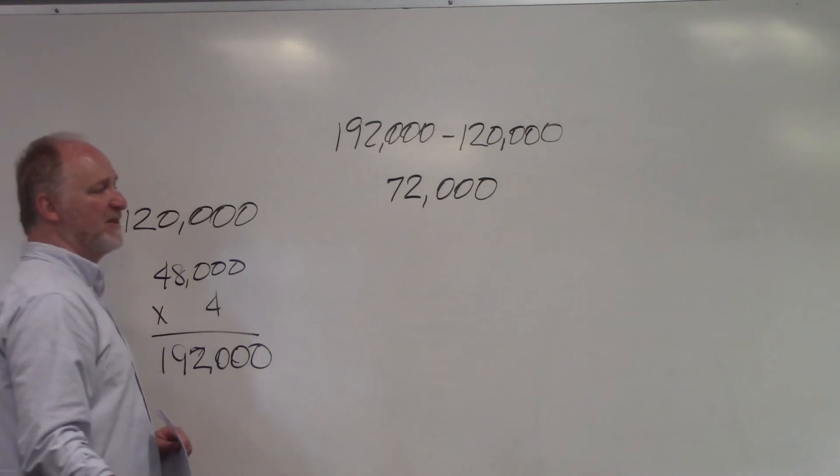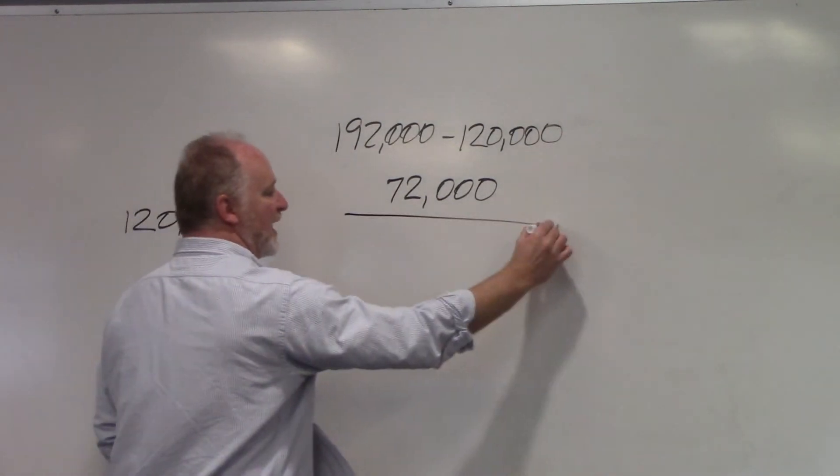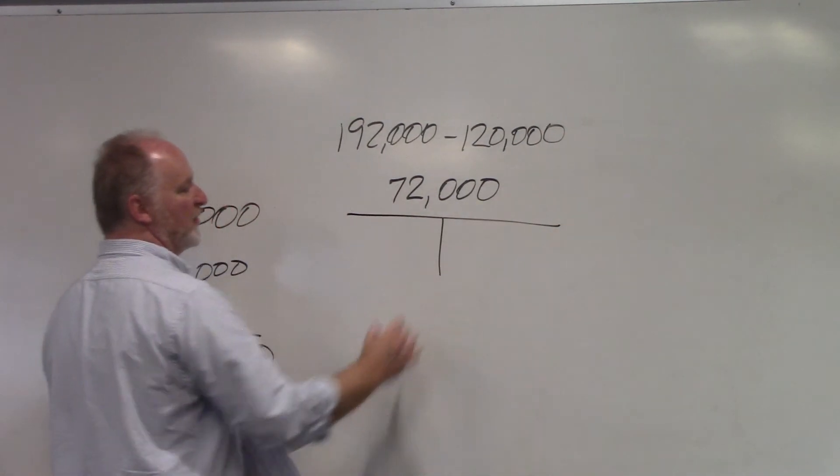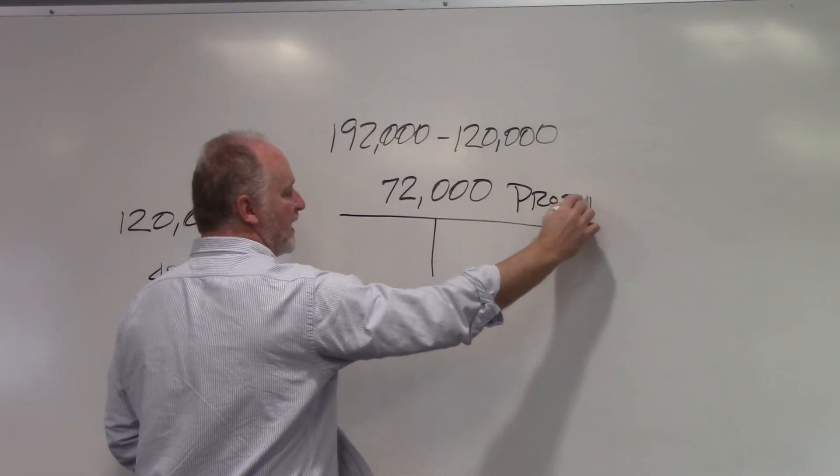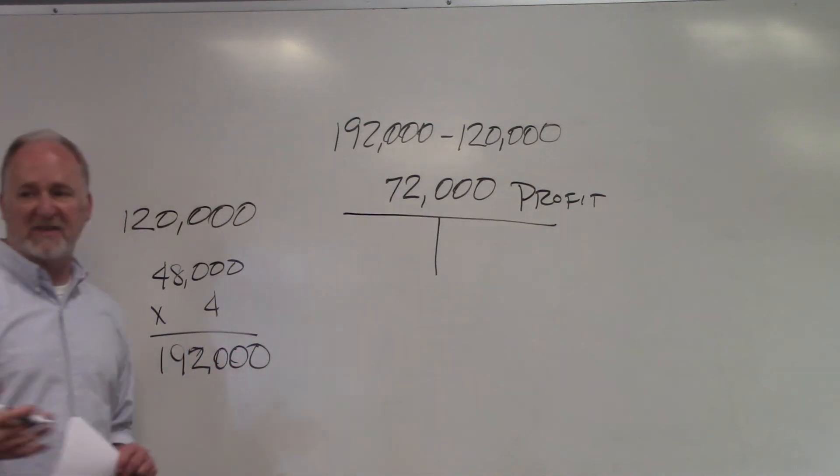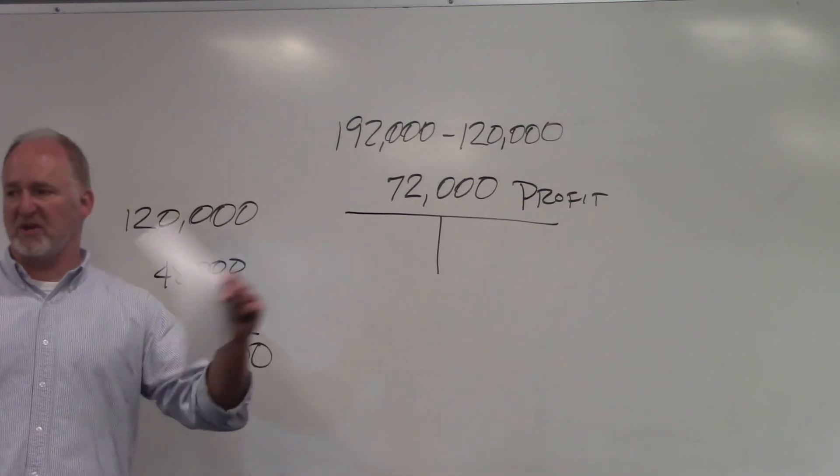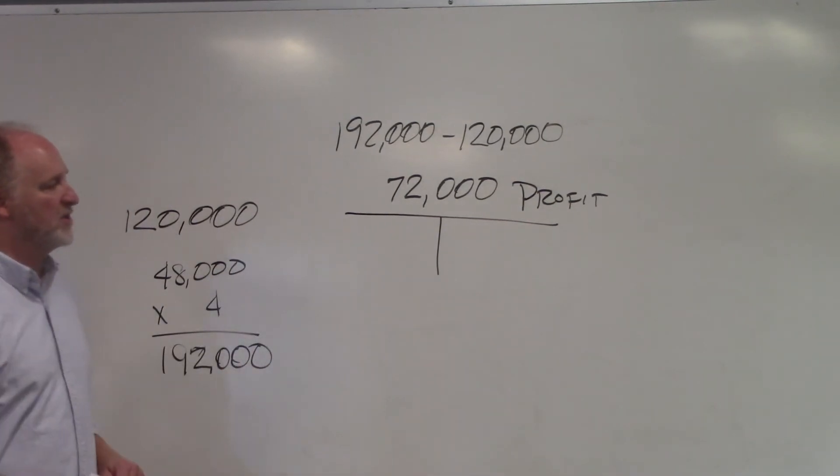And the reason I put the $72,000 there is if you like to use a T-bar for this one, this one becomes very simple. It's the relationship between his profit and his original investment. In this case, we're talking about his whole investment, percent of profit. What did he make off his original investment?